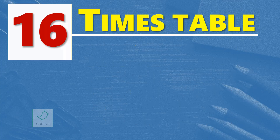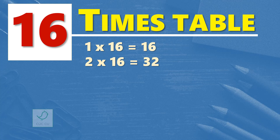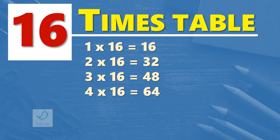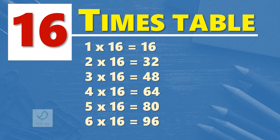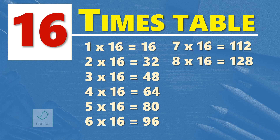16 times table. 1 times 16 is 16. 2 times 16 are 32. 3 times 16 are 48. 4 times 16 are 64. 5 times 16 are 80. 6 times 16 are 96. 7 times 16 are 112. 8 times 16 are 128.